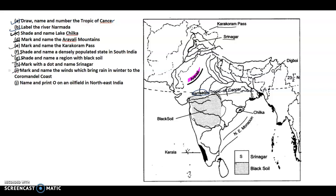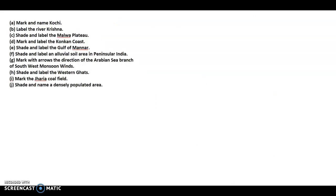Mark and name the winds which bring rain in winter to the Coromandel Coast — you can see northeast monsoon; these are the winds which bring rain in winter to the Coromandel Coast. Then name and print O on an oil field in northeast India — Digboi is an oil field in northeast India. Mark and name Kochi and River Krishna.